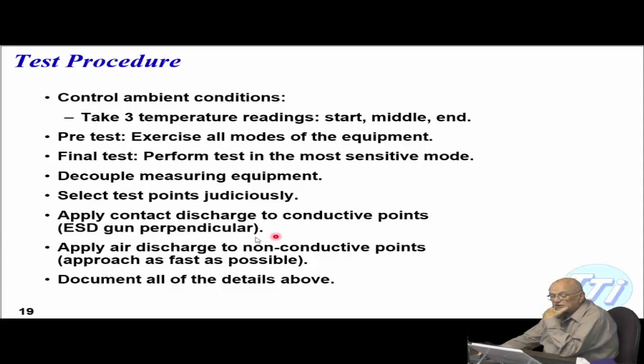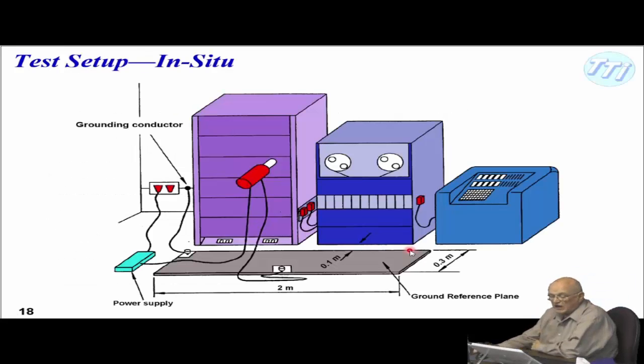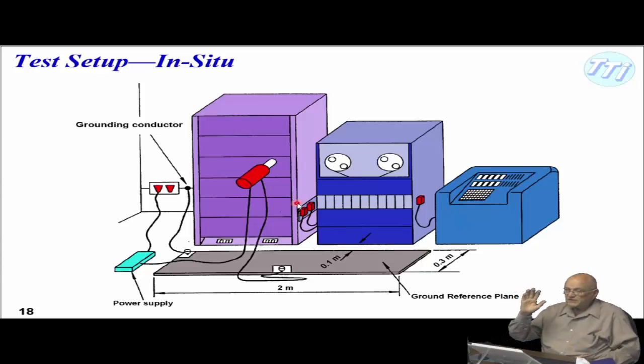Apply contact discharge to conductive points. Apply air discharge to non-conductive points. In the cabinets today, a lot of this outside right here happens to be kind of like a plastic coating on the aluminum. Or it could be effectively anodized aluminum, couldn't it?